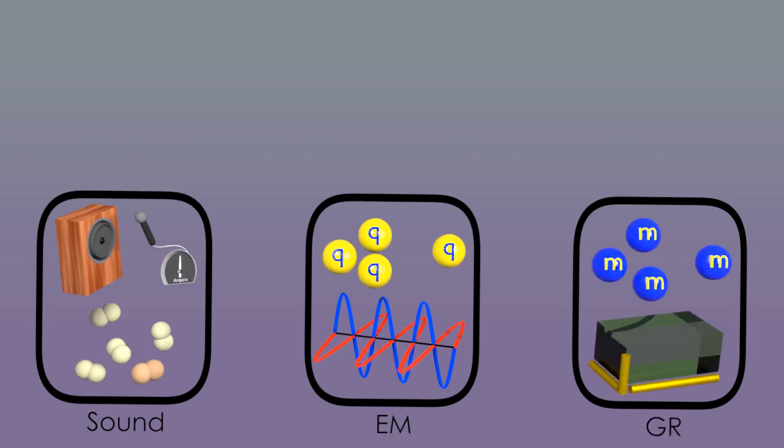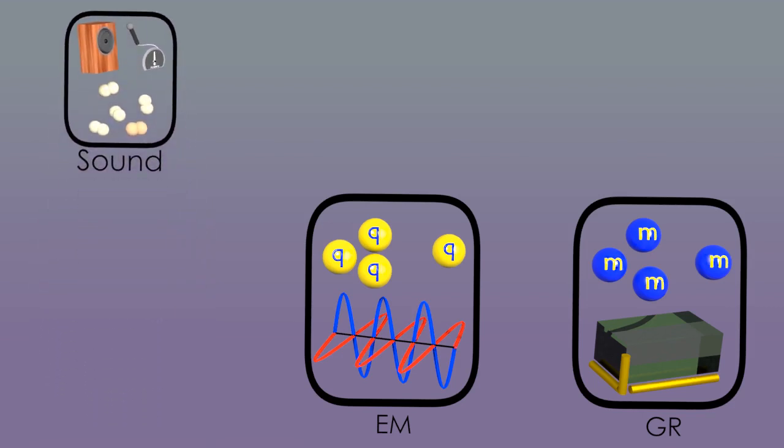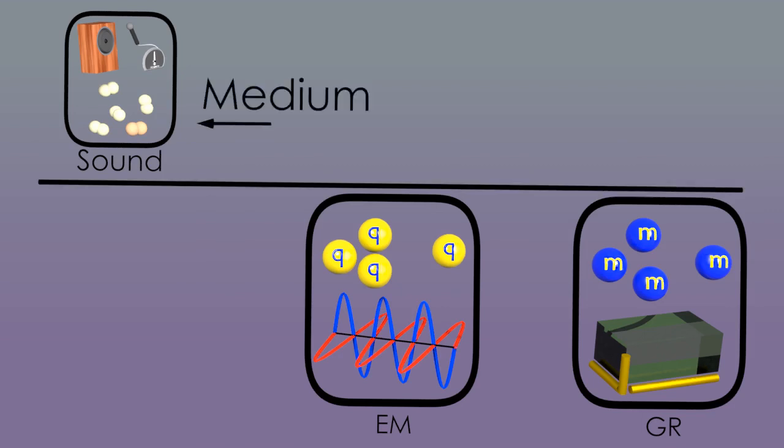So we have three similar cases. Sound in air, classical electrodynamics, and general relativity. And we said that only air has constituents that we know anything about. So air is not fundamental. It's a medium. On the other hand, the electromagnetic field and the space-time metric, they are fundamental. We can only guess what their substrata look like.